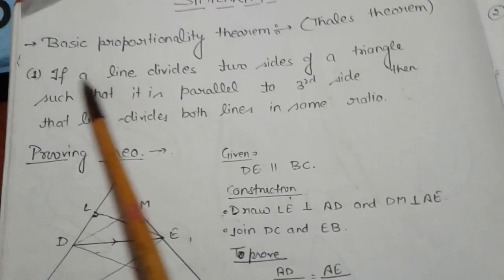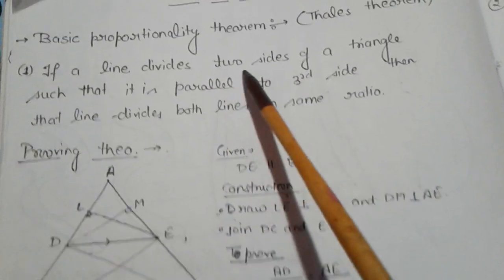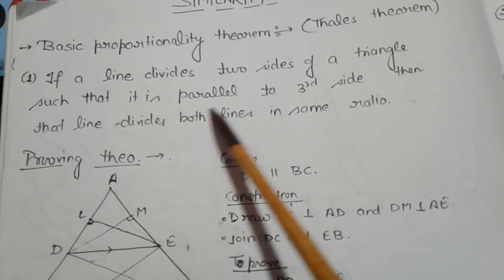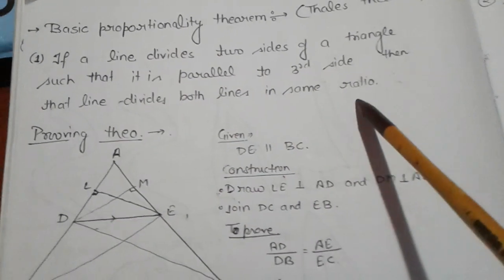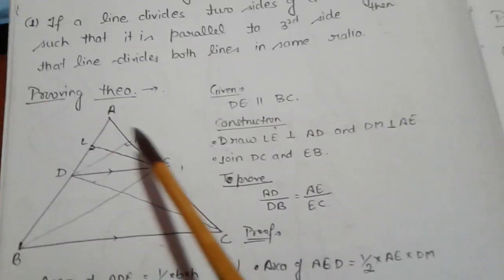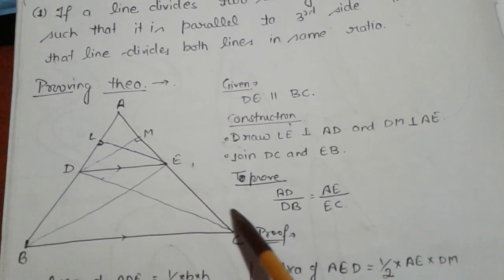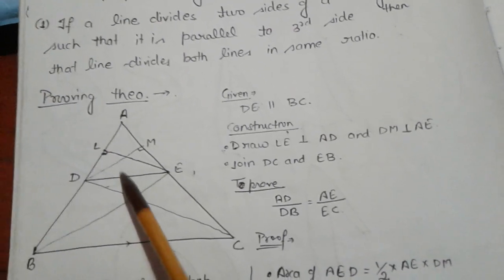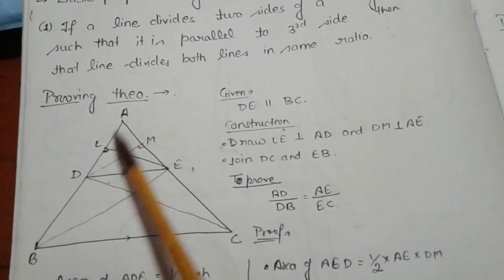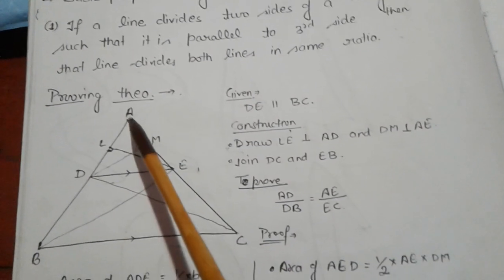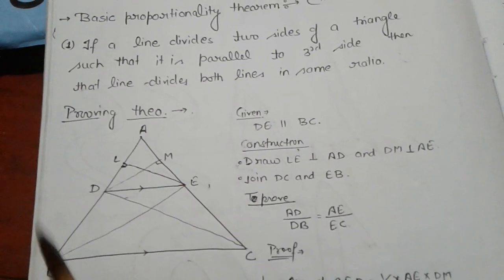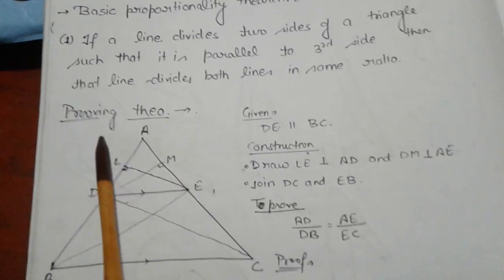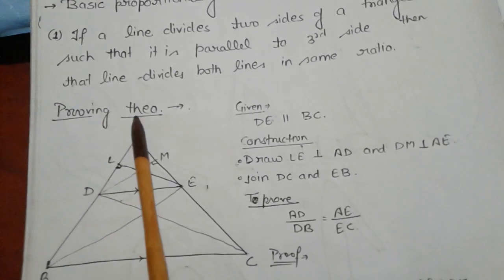If a line divides two sides of a triangle such that it is parallel to the third side, then the line divides both sides in the same ratio. See here in the figure: ABC, DE is a line that is parallel to BC, and it intersects AB and AC such that AD upon DB is equal to AE upon EC. This is called the Basic Proportionality Theorem. Now we are going to prove this theorem.